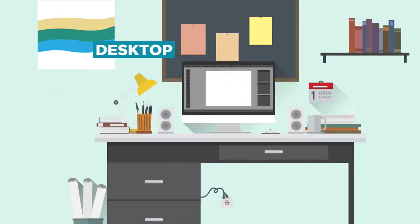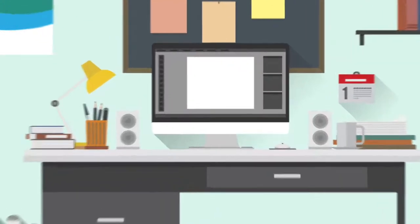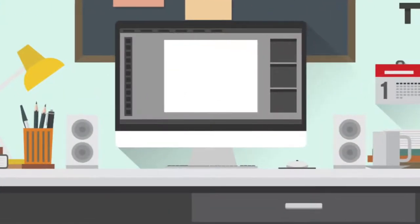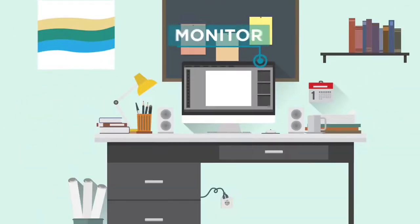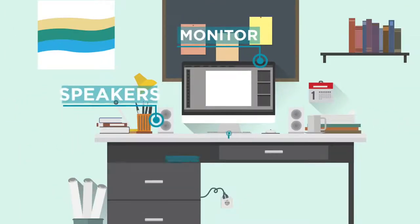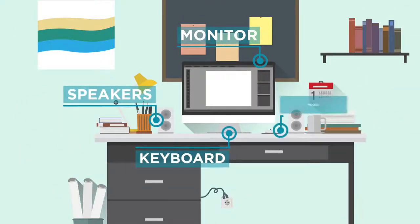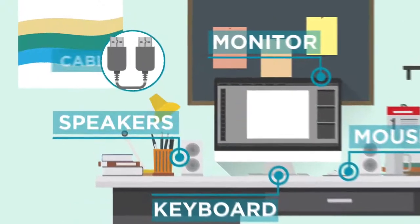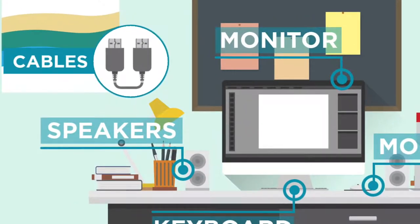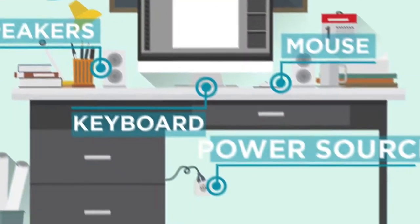A desktop is a personal computer designed to stay in one place, like on top of a desk. A desktop computer typically has separate pieces for the base unit, monitor, speakers, keyboard, and a mouse. These parts must be connected using cables. Desktop computers must be plugged in to a power source.